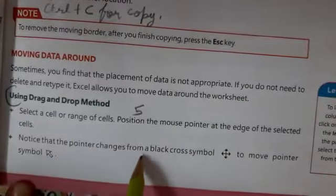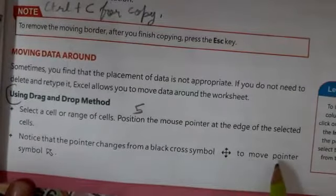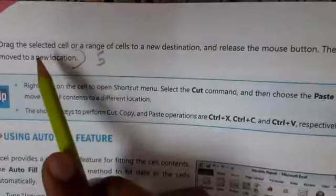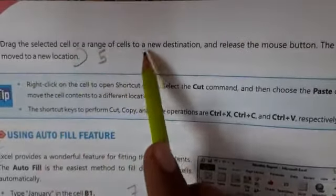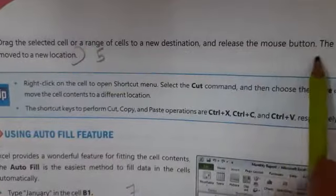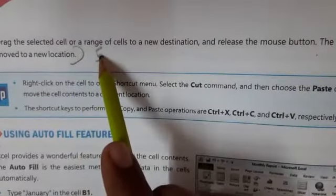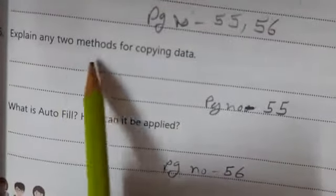Notice that the pointer changes from a black cross symbol to move pointer symbol. Now turn the page. Now drag the selected cell or a range of cells to a new destination and release the mouse button. The data will be moved to a new location. So this is the answer number five.